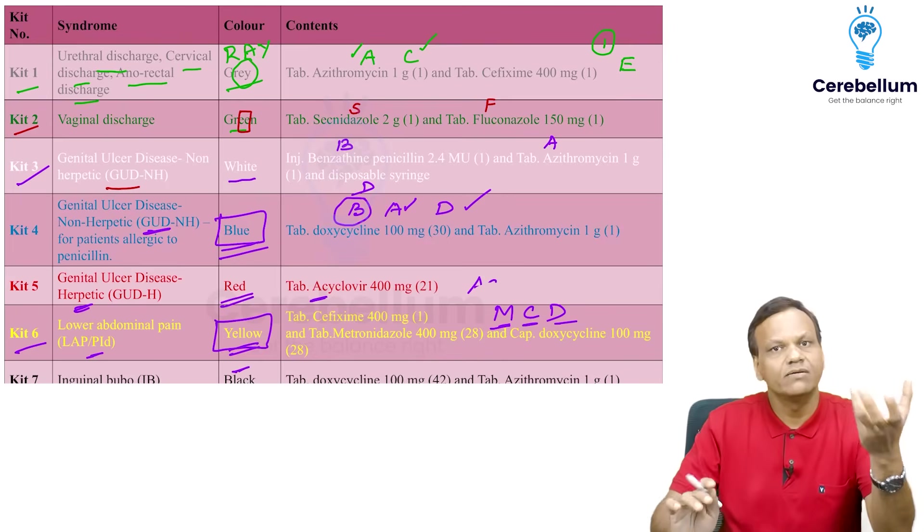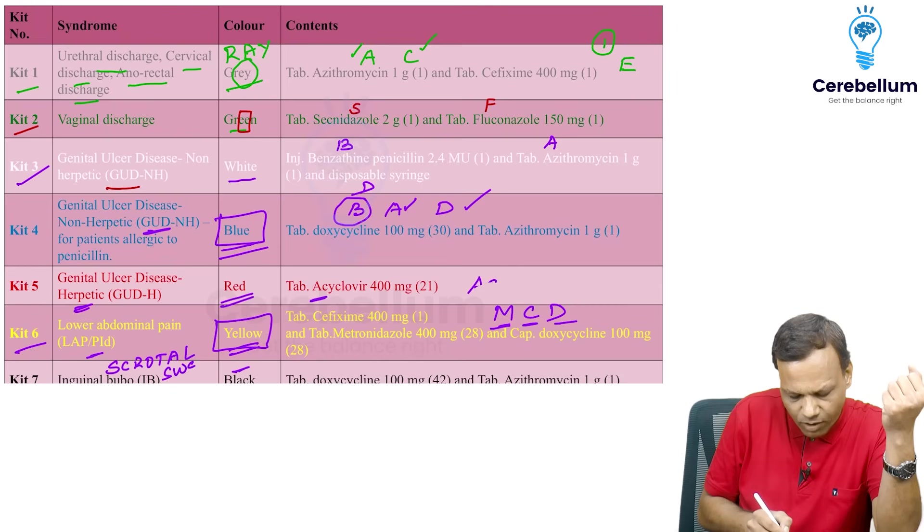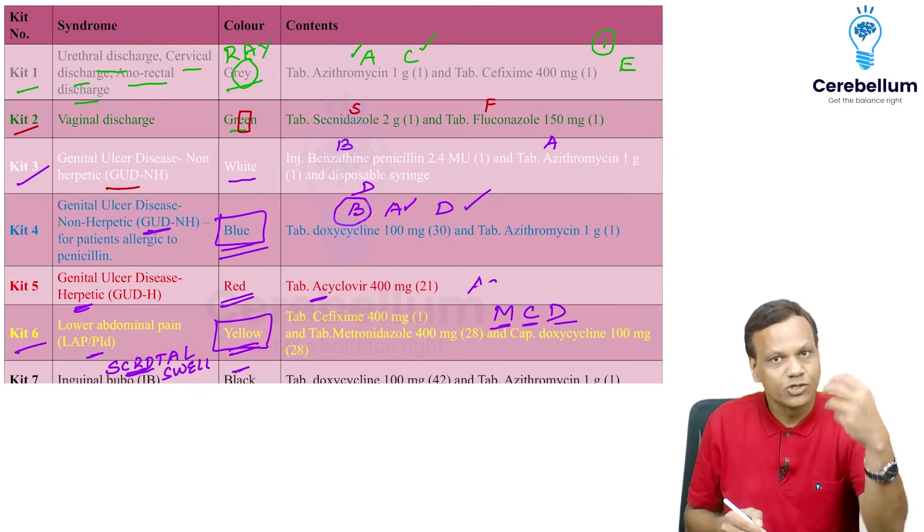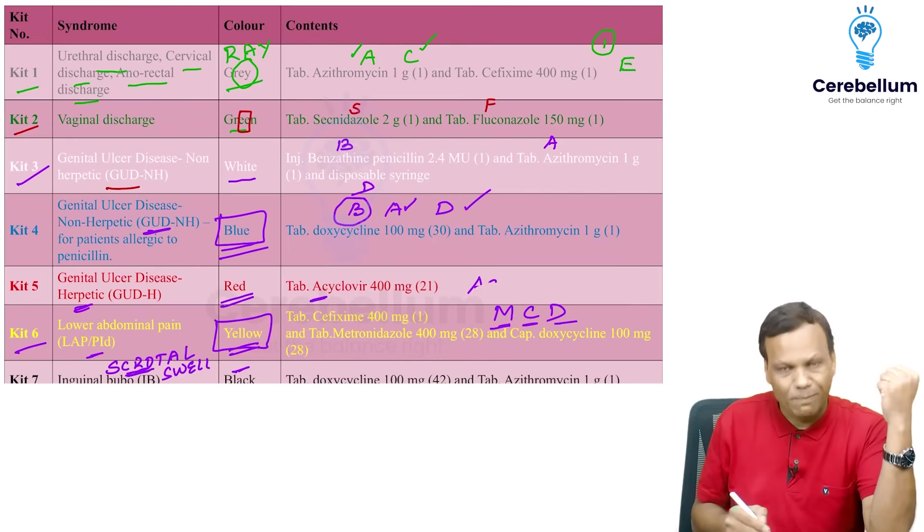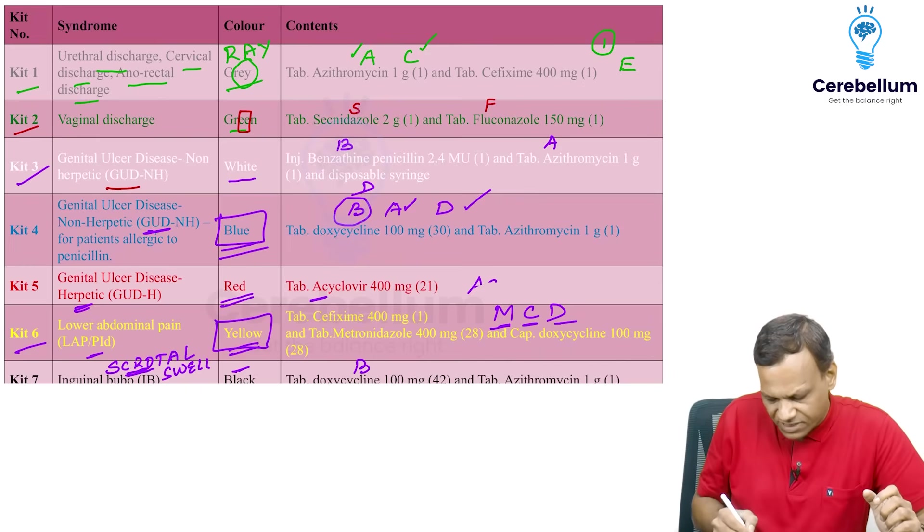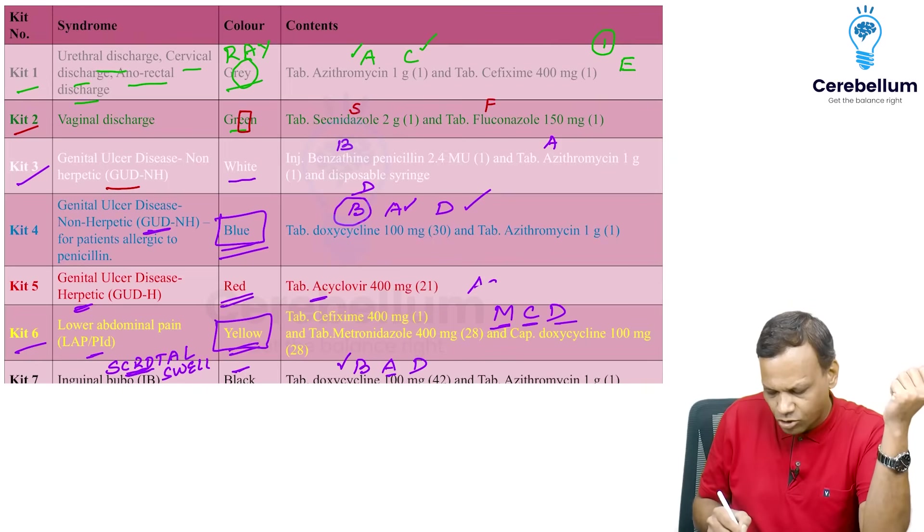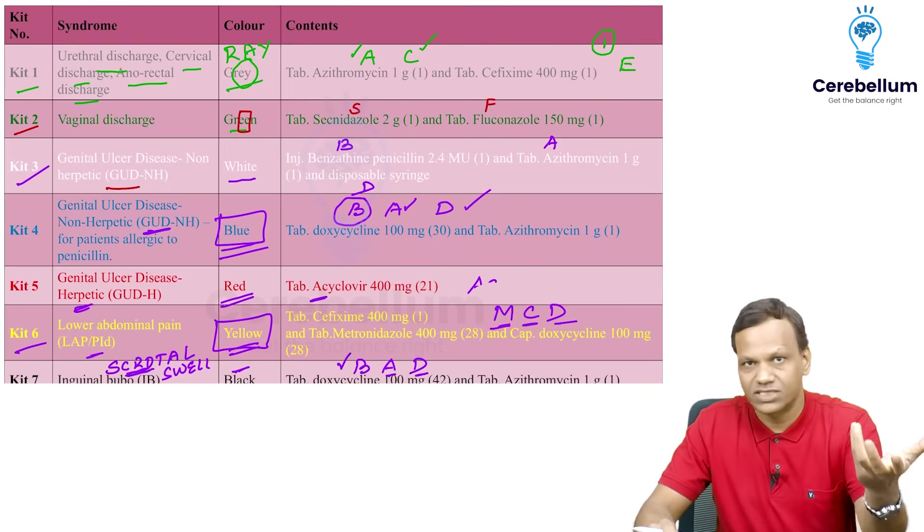Then the last kit is black kit 7. Kit 7 is black. It is for inguinal bubo or scrotal swelling. So from scrotal swelling, you can remember scrot. So word looks like crow and crow is black in color. So it is scrotal swelling. Crow means black or inguinal bubo B means black. So it is black in color. So scrotal swelling or bubo is black in color. So it is black and again it is black. So starting with B. So wherever B there is bad. B means bad. So black also contains azithromycin and doxycycline. Contains azithromycin and doxycycline.